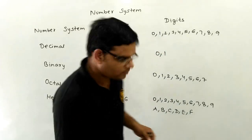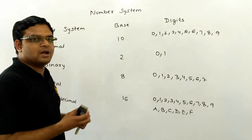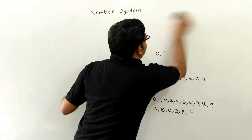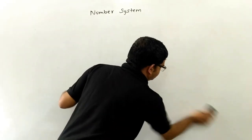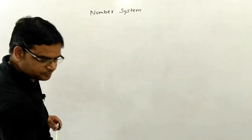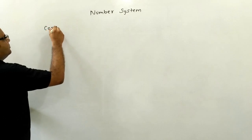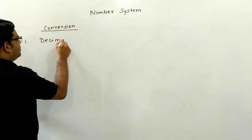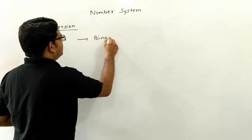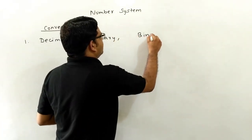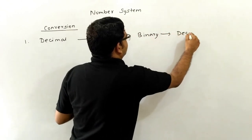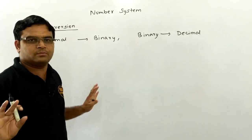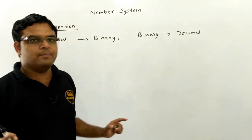Please, students, note down that concept. Any number can be represented by any number system, and the representation may be different, but the value always remains the same. Now, 90% of the time, this type of question comes in the exam paper. So decimal to binary and binary to decimal is very important for our exam point of view.